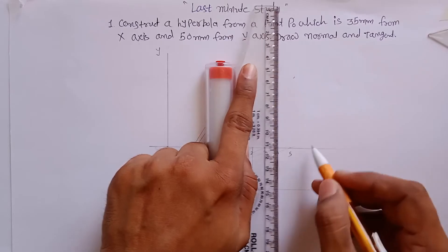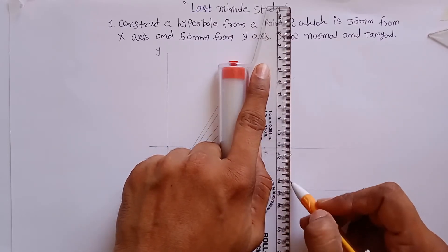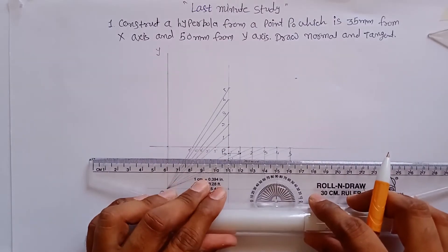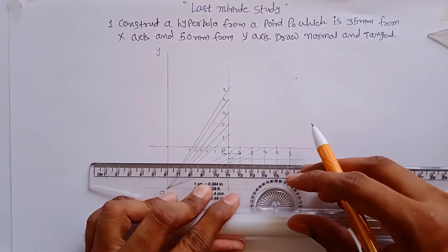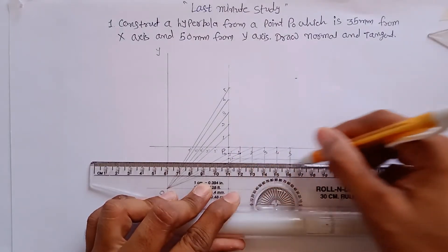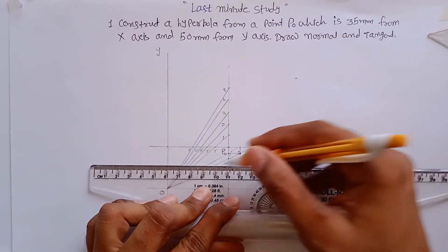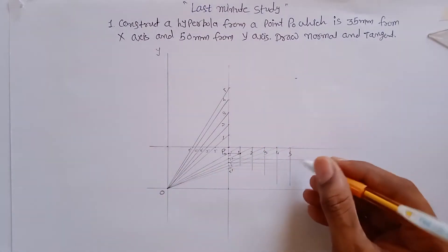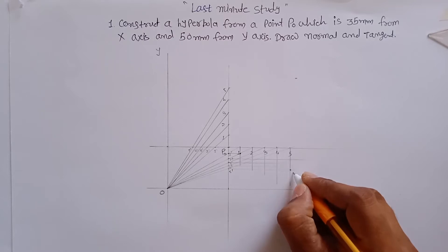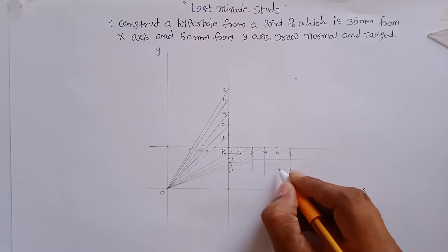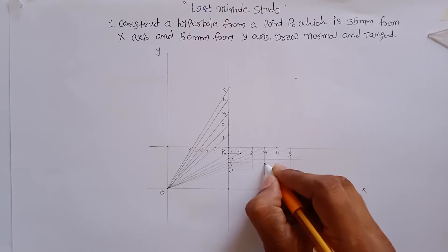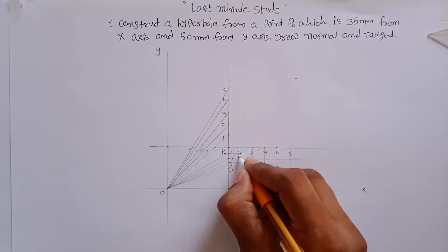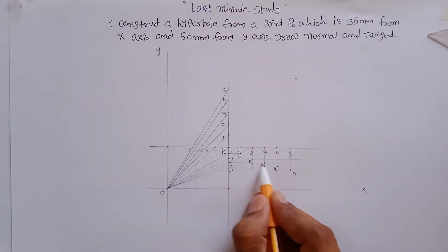Repeat this step for all five points. Draw vertical lines from points one through five, and horizontal lines from one-dash through five-dash. The intersecting points are labeled P1, P2, P3, P4, and P5. These are the intersecting points you need for the first branch of the hyperbola.